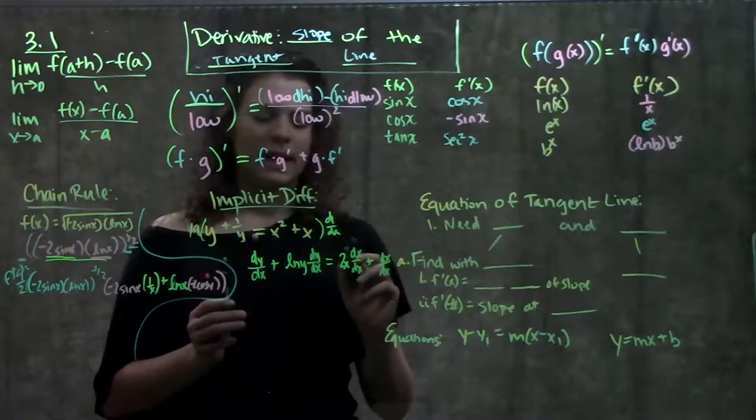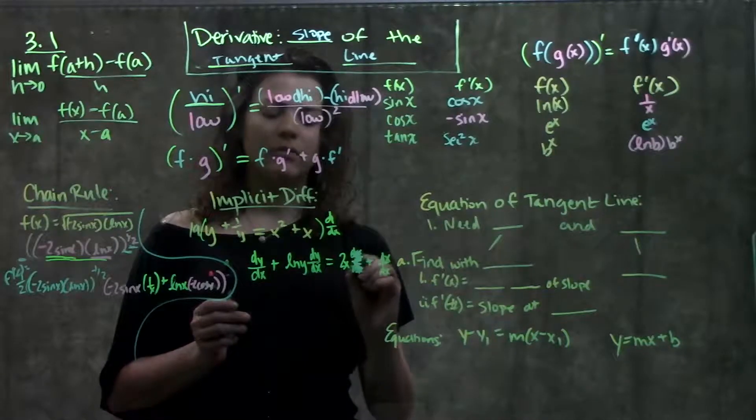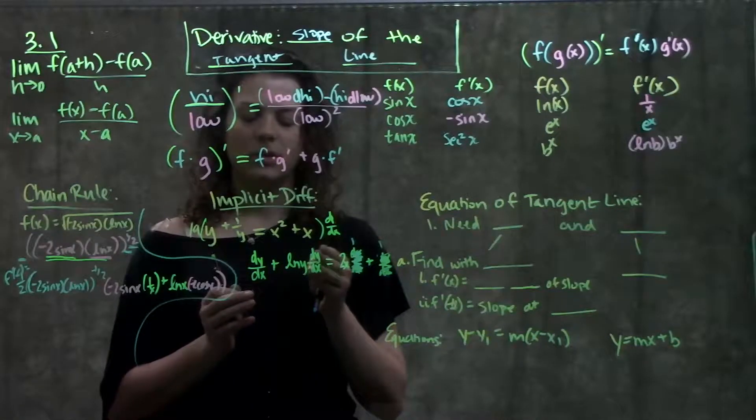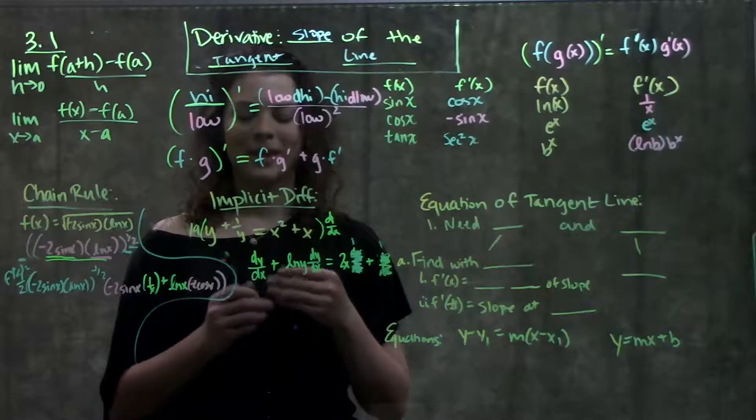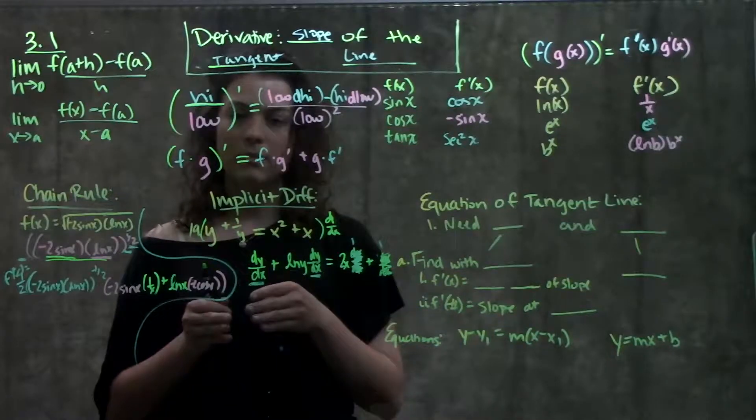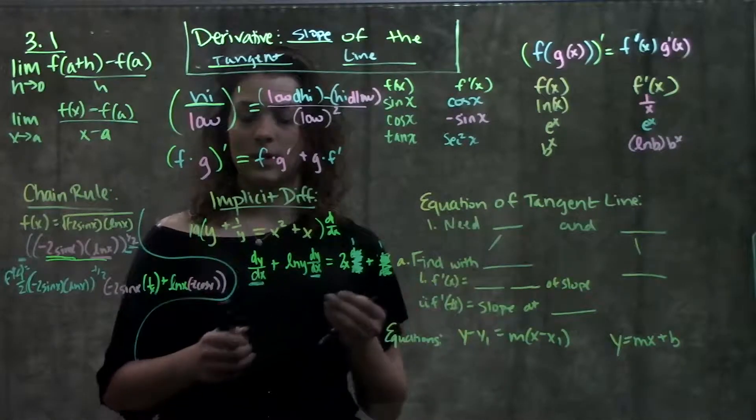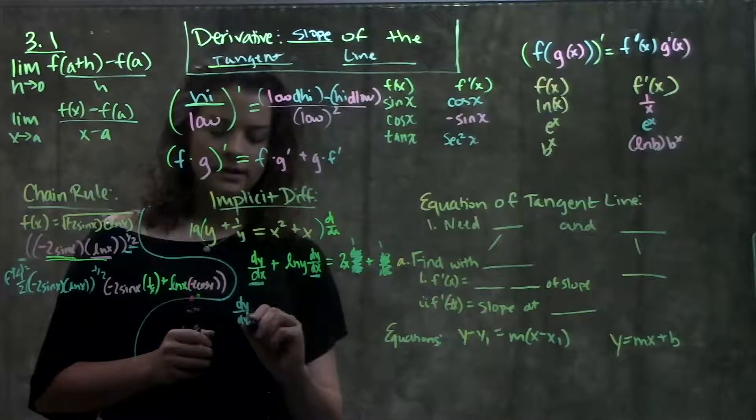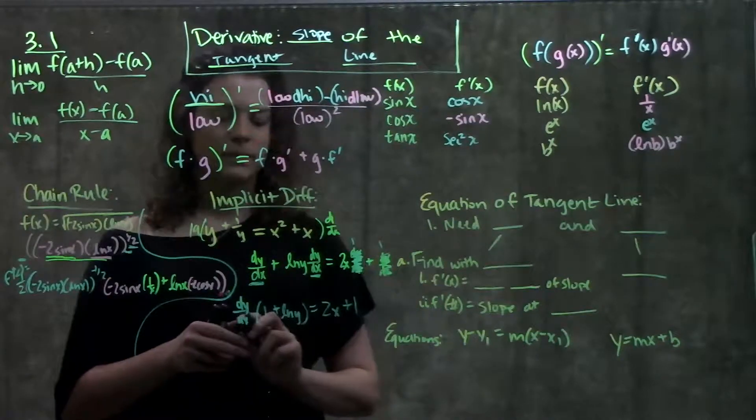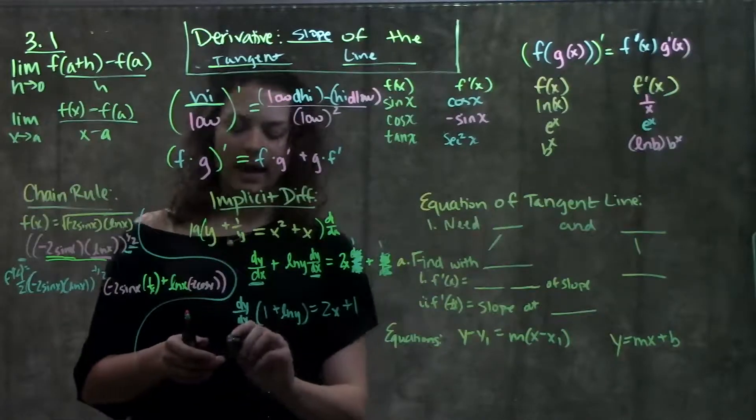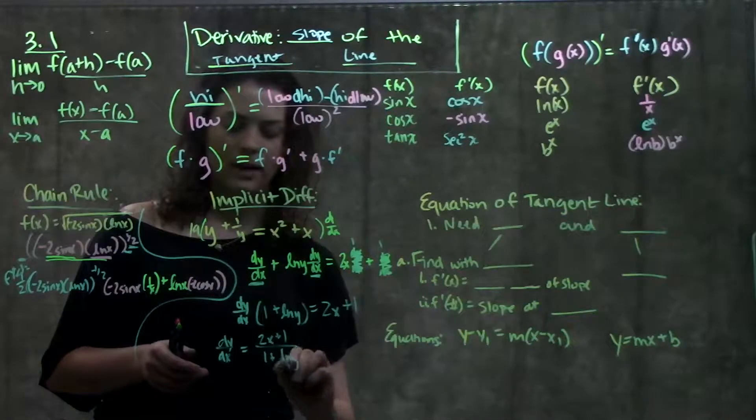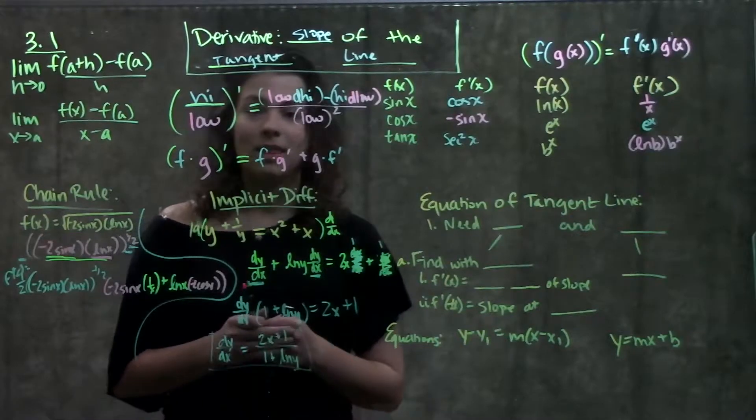But remember, dx over dx, that's just the same thing over itself. So we can cross that out because that's just 1. So now I have dy over dx plus ln y dy over dx equals 2x plus 1. I'm solving for my derivative or my dy over dx. So what I'm doing from here is I'll take out my dy over dx and solve for it like I would in a normal equation. I take out my dy over dx. I'm left with on this side 1 plus ln y is equal to my same right side, 2x plus 1. And now I just divide this over and I get that dy over dx is equal to 2x plus 1 over 1 plus ln y. And that's my slope.